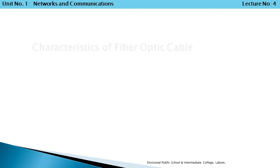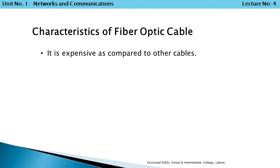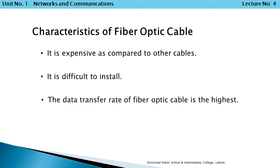Characteristics of Fiber Optic Cable. Number 1: It is expensive compared to other cables. Number 2: It is difficult to install. Number 3: The data transfer rate of fiber optic cable is the highest. Compared with copper media, fiber optic cable greatly improves security, reliability, and network performance. So it is the best choice for the formation of larger networks.